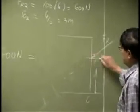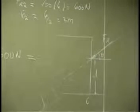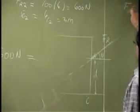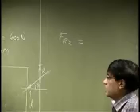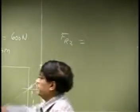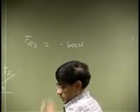So then we are going to take this angle here, this is theta. FRX, the X component of this will be same thing as this. So this is negative 600 newtons.